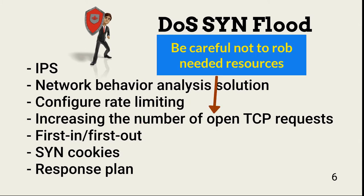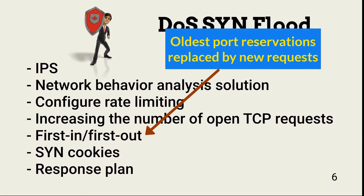Expanding the number of open TCP requests available by increasing the size of the backlog queue is another defense. The backlog queue contains a list of open connection requests and it is limited in size. Increasing the size of the queue takes resources away from other server functions, so care must be taken. Configuring first in and first out means the oldest open request is overwritten when the maximum number of requests is reached. This may allow some connections, but it will be intermittent and not nearly enough for normal business operation.